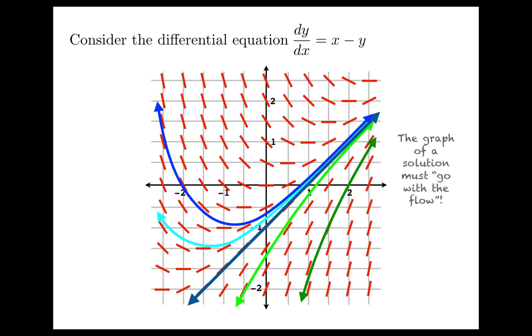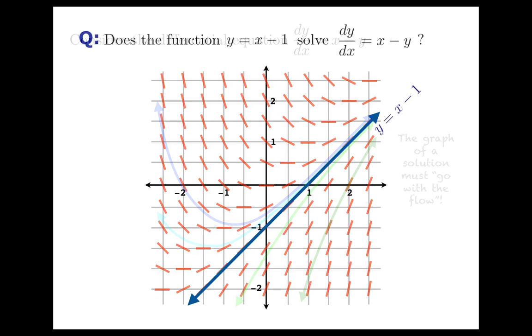Now, without performing any calculations to speak of—we just were adding some numbers and subtracting some simple integers—you've got a pretty good idea of what solutions look like graphically. That's pretty impressive. But we can even squeeze more out of this problem, because there's one particular guy that looks intriguing here. It really looks like the line y equals x minus 1 is a solution.